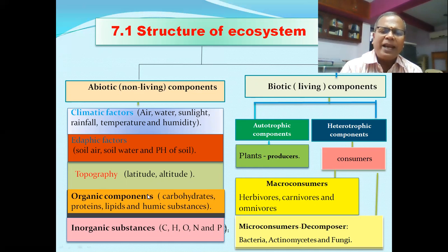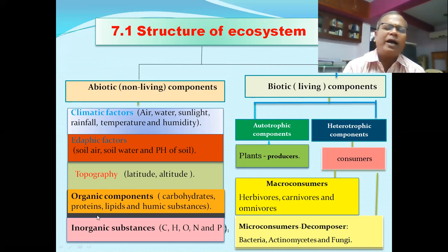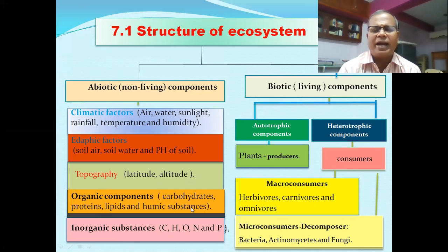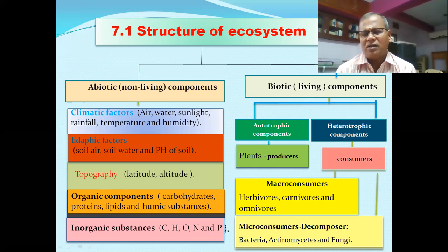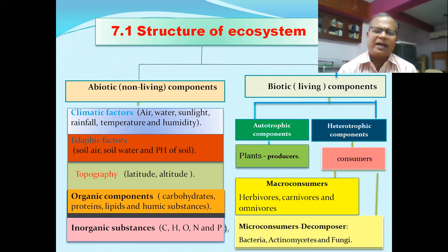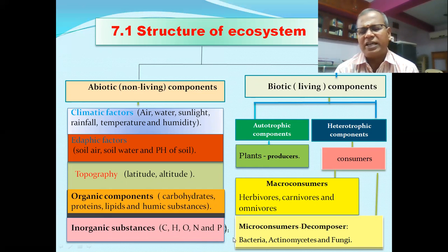Organic components include carbohydrates, proteins, lipids, and humus. Inorganic substances include carbon, hydrogen, oxygen, and phosphorus. These form the abiotic component of the ecosystem.